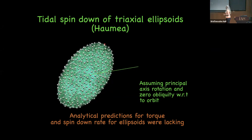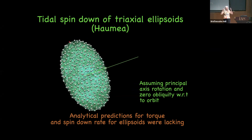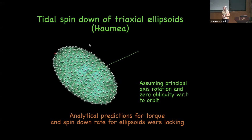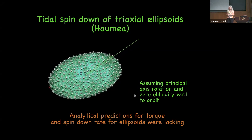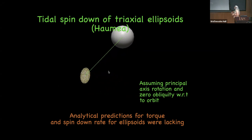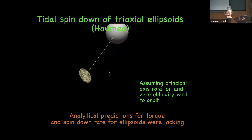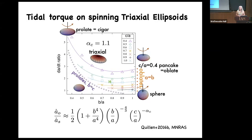After publishing that paper, Darren Ragozzine said we needed to look at Haumea — this elongated body. Tidal computations usually assume spherical bodies, which is easier to calculate, and so we didn't really have constraints on what shape was spinning. We ran a simulation with the perturber and this non-round body with many particles, under principal axis rotation and zero obliquity. We looked at the tidal spin-up or spin-down rate for a bunch of different shapes.